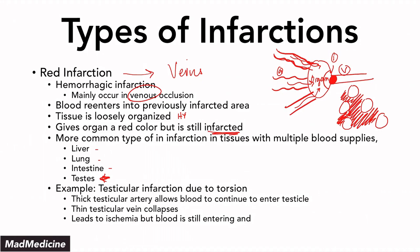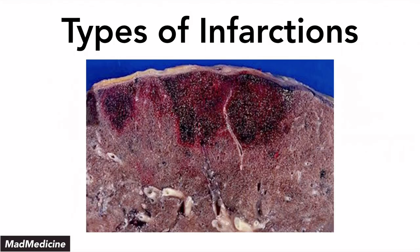In your testicle, the artery of the testicle is actually very thick. And because it is very thick, when you have torsion occurring, the thin testicular vein will collapse — and that is where you have the actual obstruction occurring. But because the testicular artery is very thick, it's going to continue to perfuse the testicle, and that's going to all lead to ischemia even though blood is still entering. This is what a red infarction looks like.